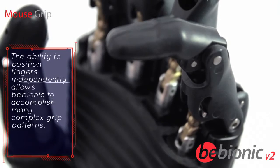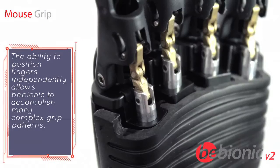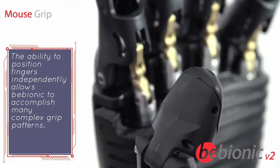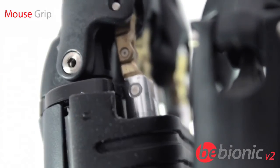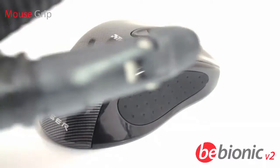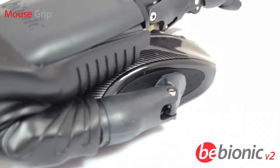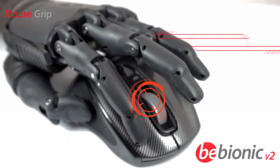Not available in other prosthetic hands, mouse grip allows the user to hold and operate a computer mouse. The hand takes a secure grip of the mouse whilst the index finger operates the mouse button.